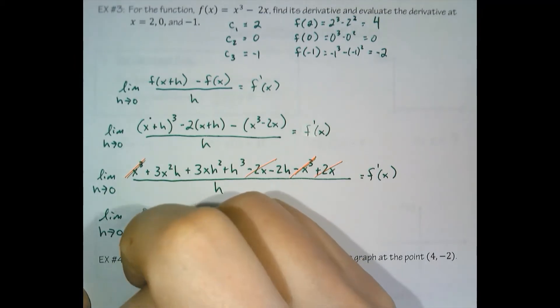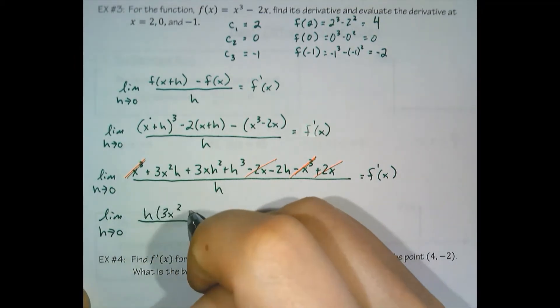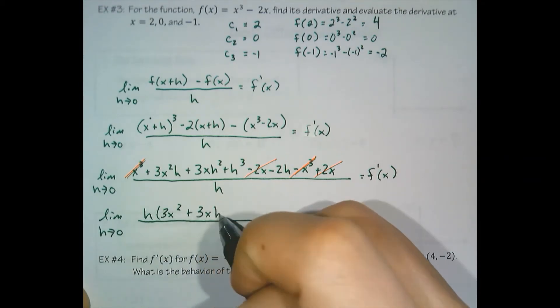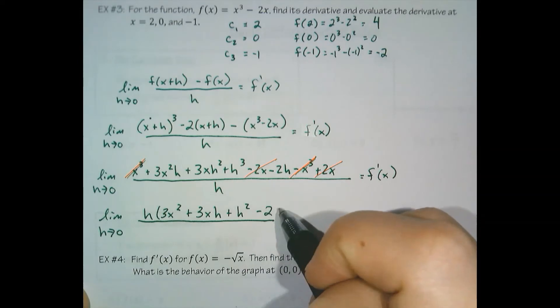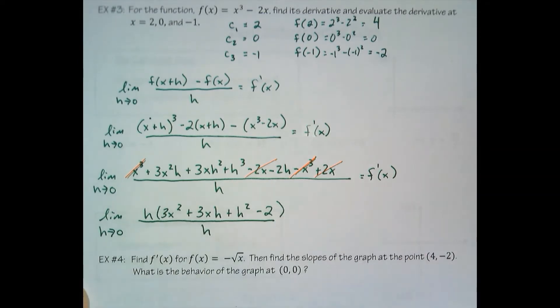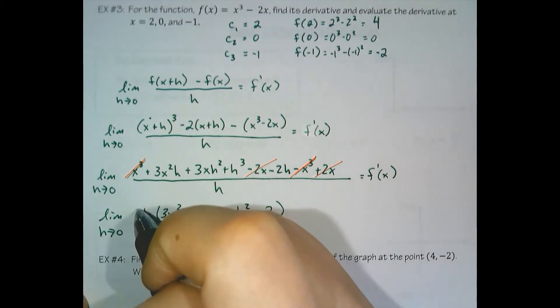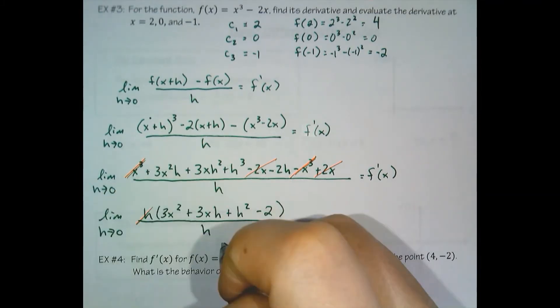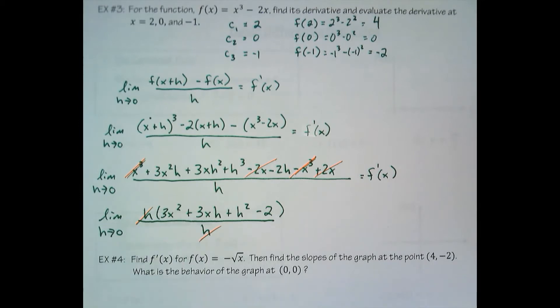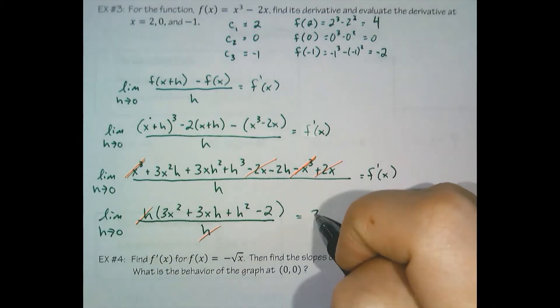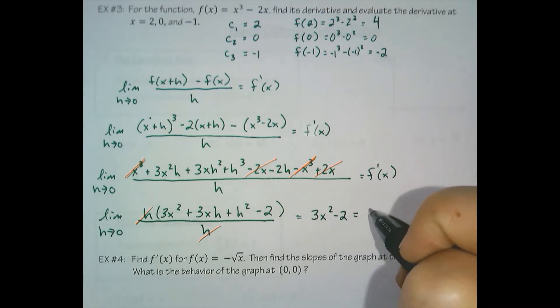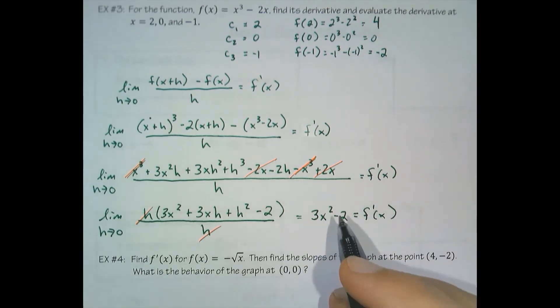And there's an h in the denominator. So if we were to factor the h out of the numerator, we can then cancel the h out. And if we plug zero in for h now, we do not have a divide by zero error. Plugging zero in for h gives us three x squared plus zero plus zero minus two. And we find our derivative is three x squared minus two.